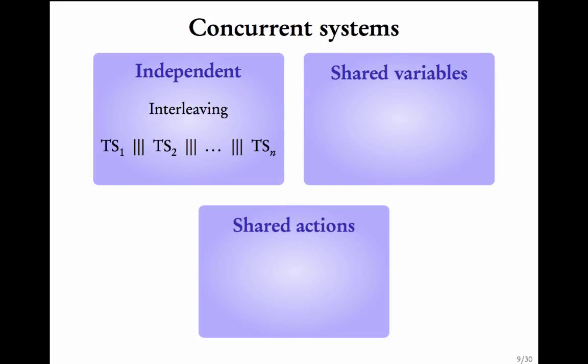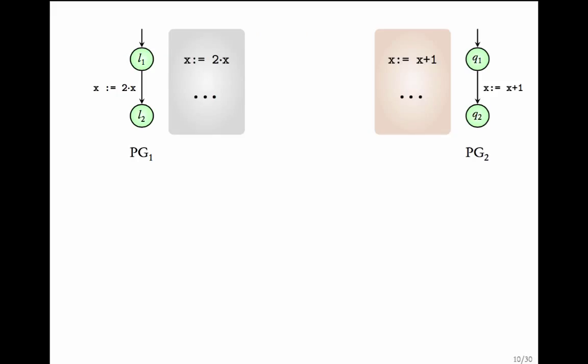We have come to the end of the first part of this module. We were looking at independent programs or independent systems. To model the joint behavior of these independent systems, we defined the interleaving operator. The next kind of systems we are going to look at will not be independent — they would have shared variables.